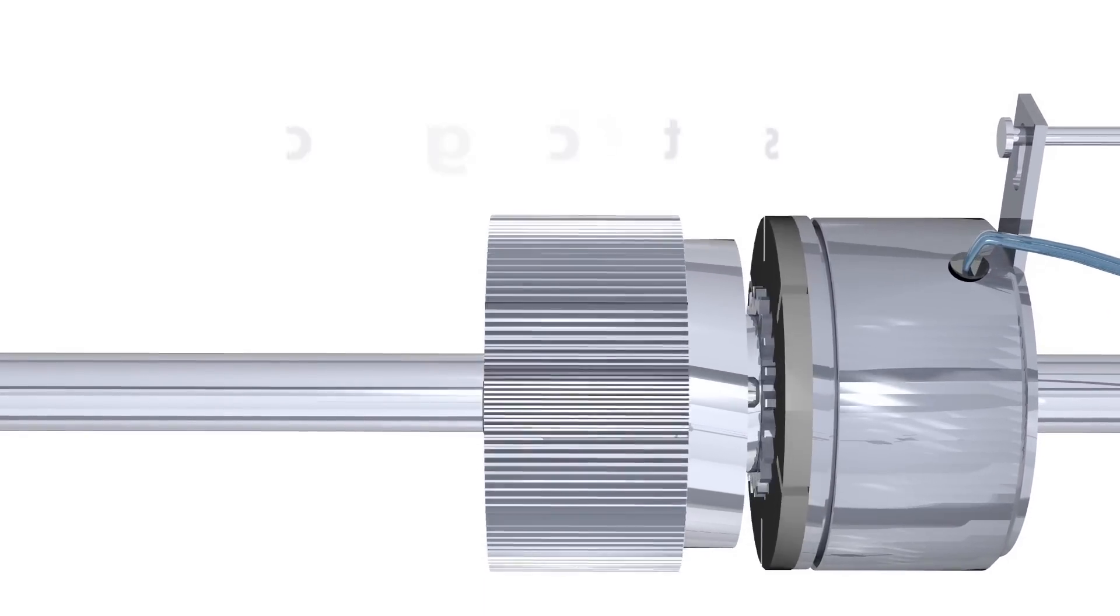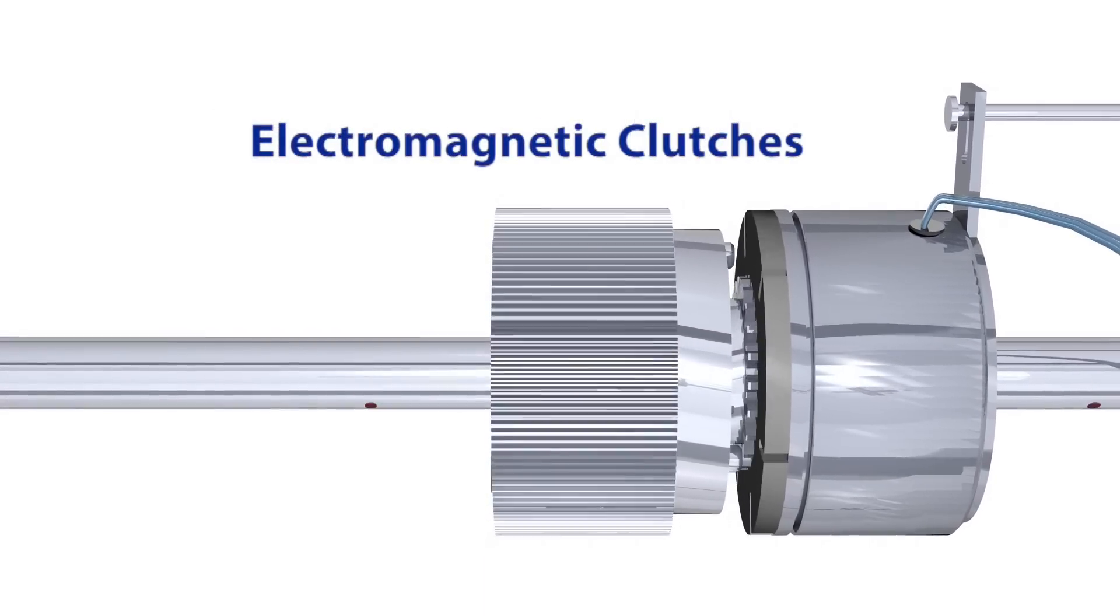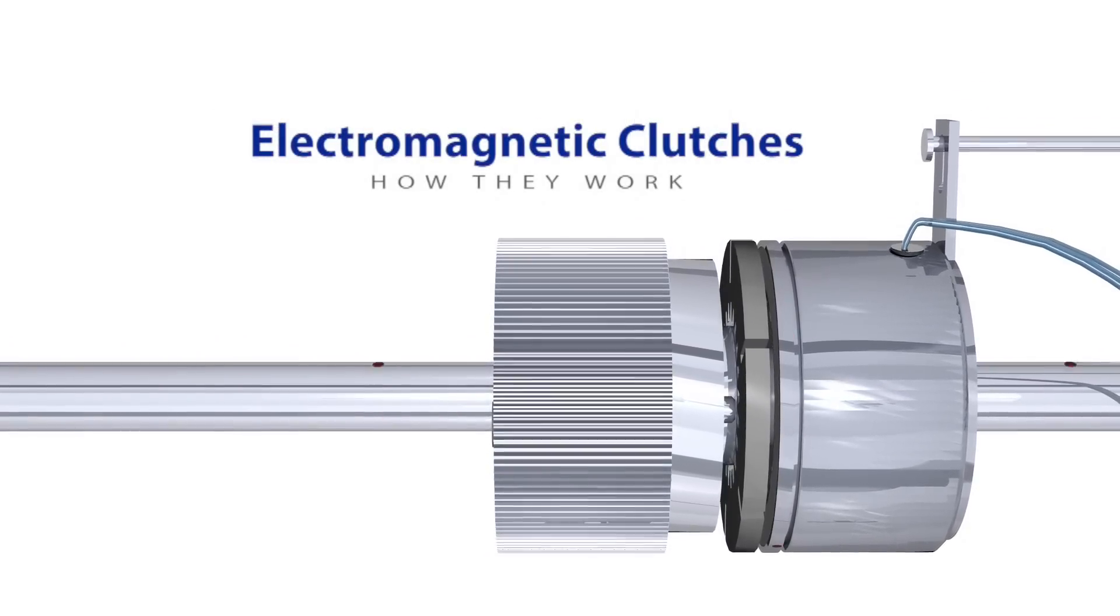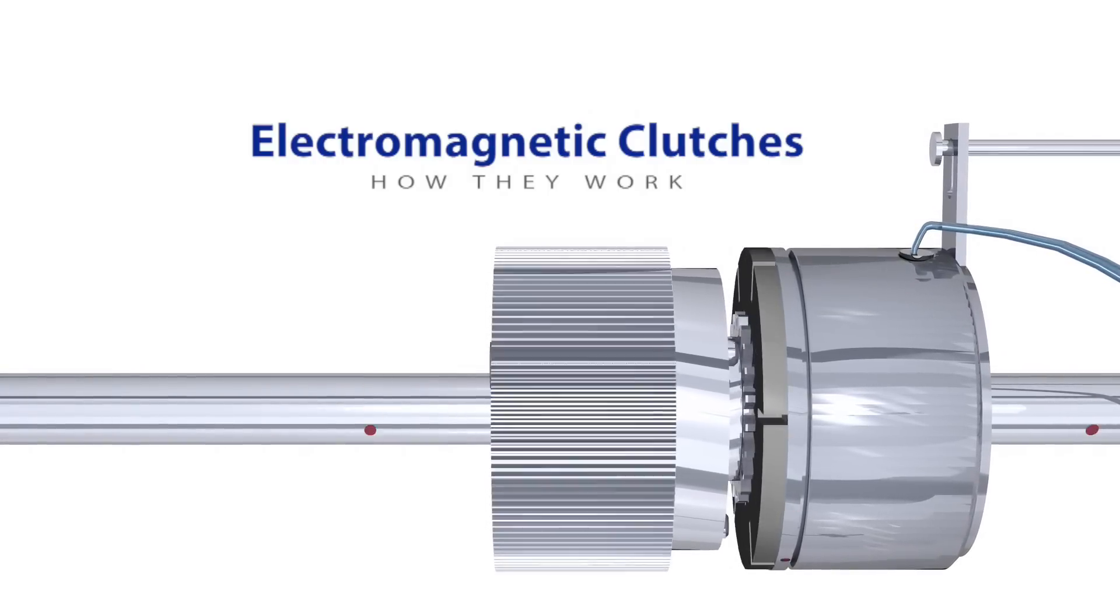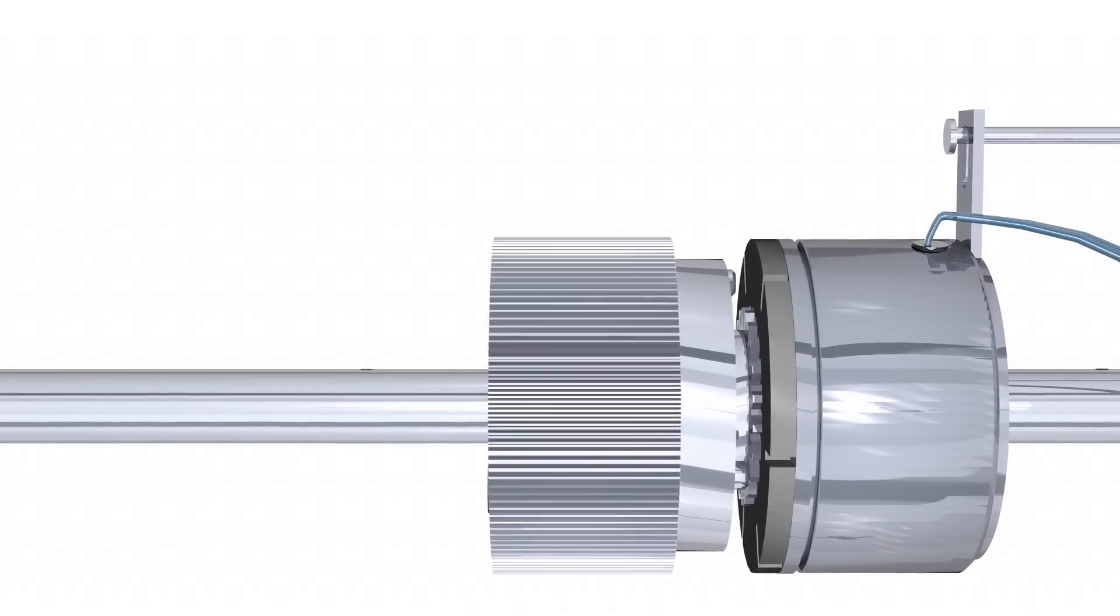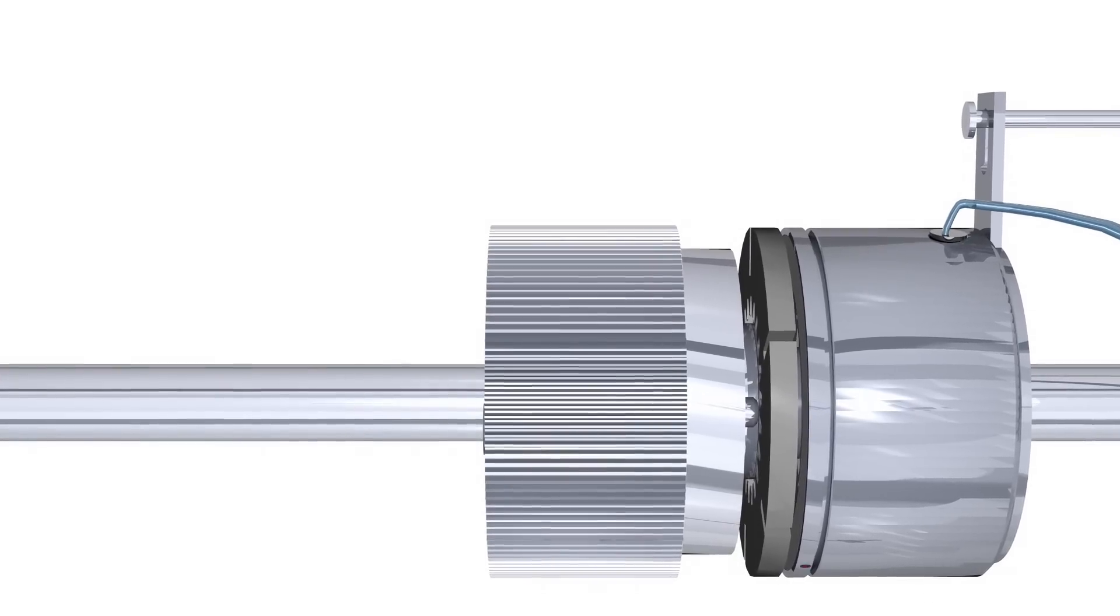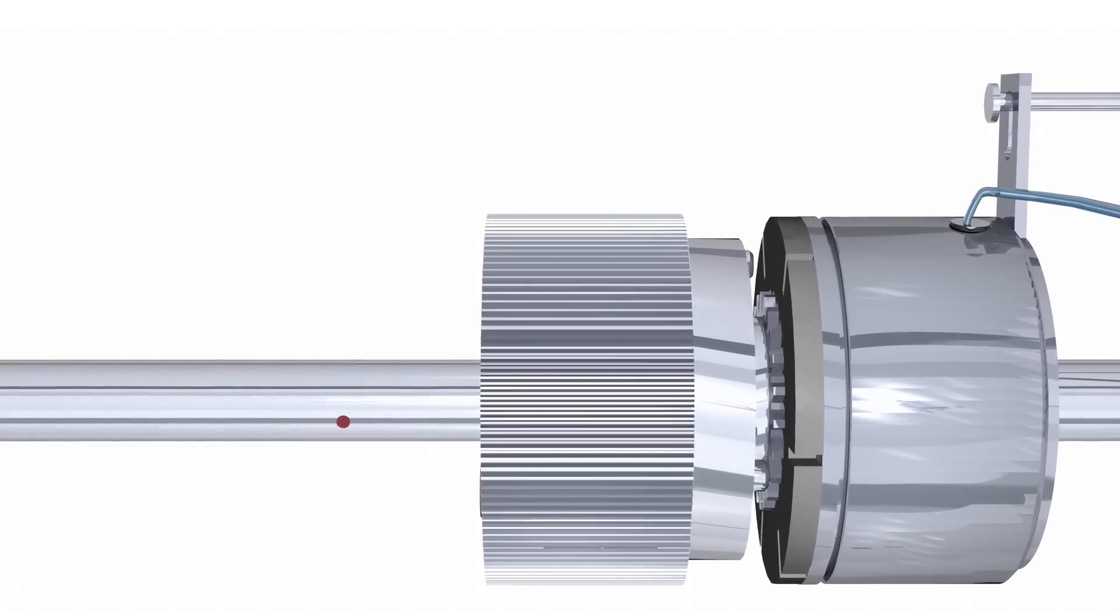Electromagnetic clutches. The majority of electromagnetic clutches use a single plate friction surface to engage the input and output members of a clutch. Although there are multiple disc and tooth designs, all function in a similar manner.